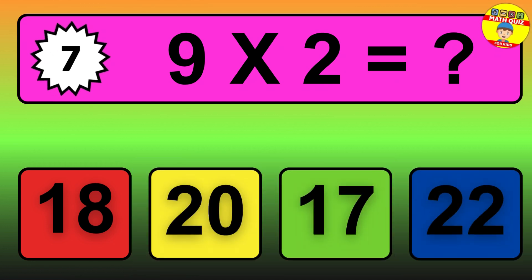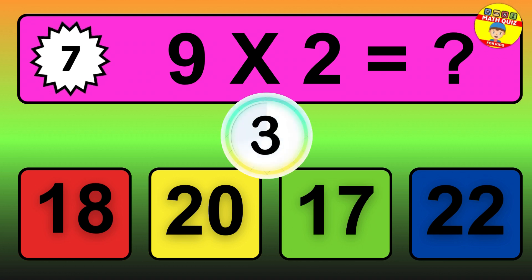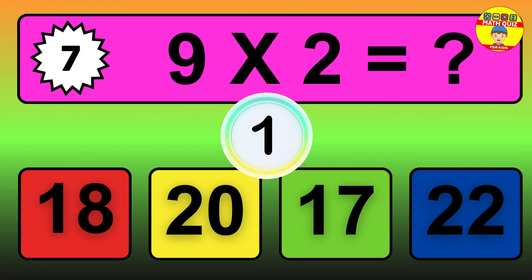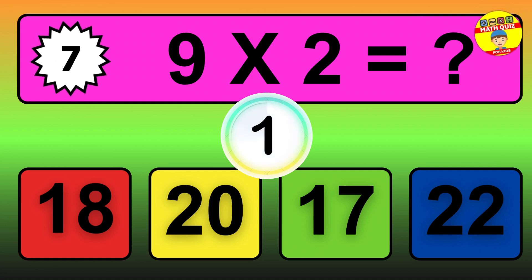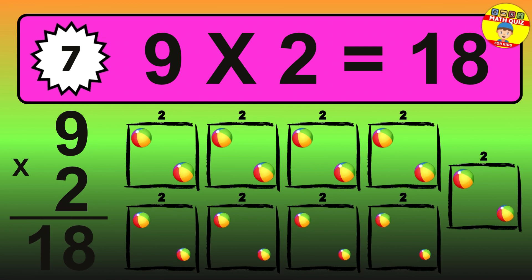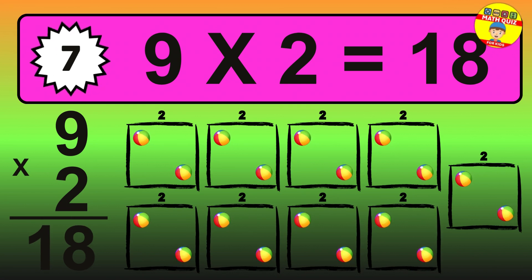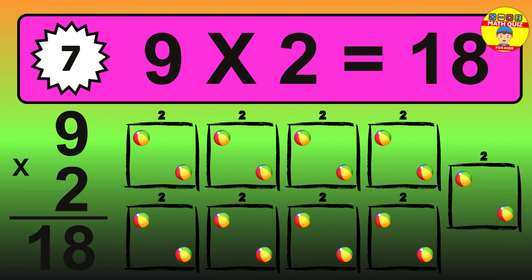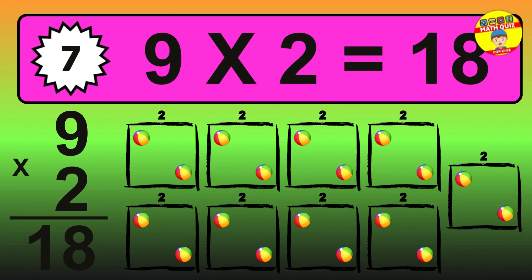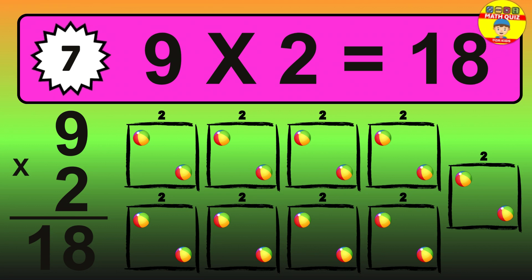Question 7. 9 times 2 equals what? The answer is 9 times 2 is 18. To calculate, we have 9 groups with 2 balls each one. So how many balls do we have? 18 balls.